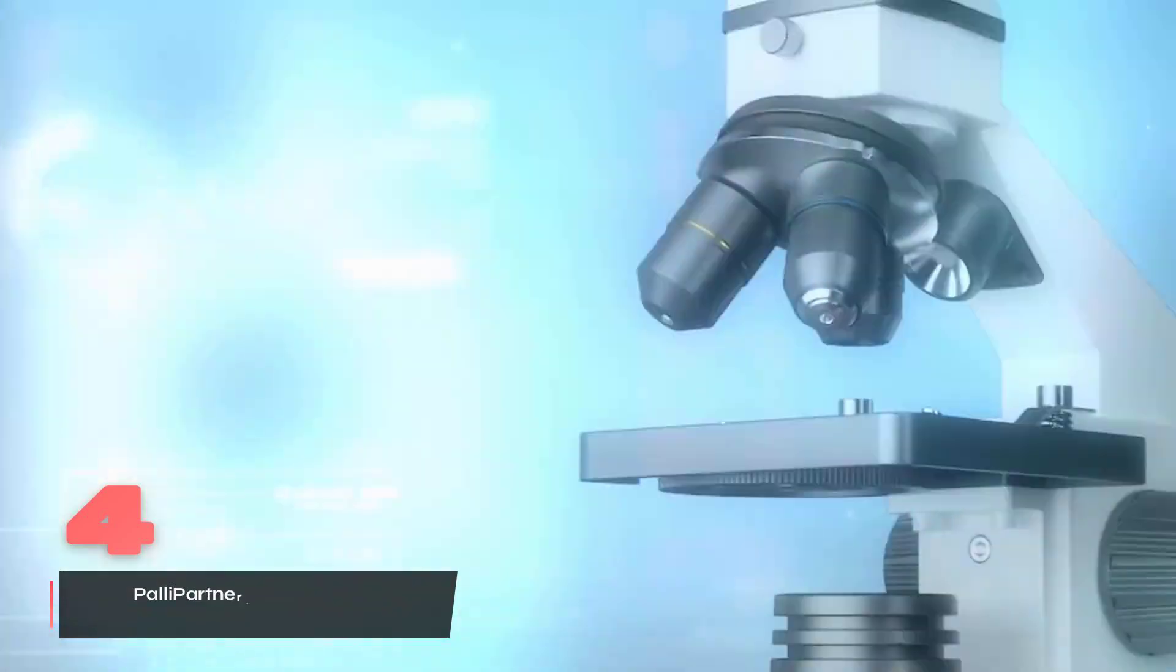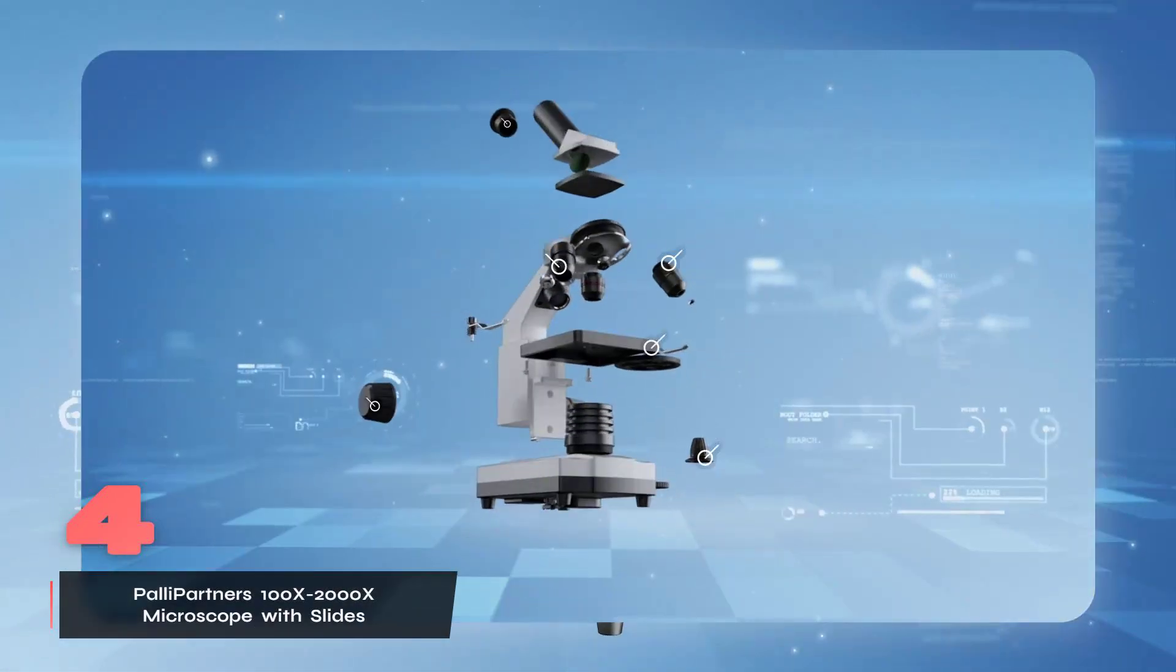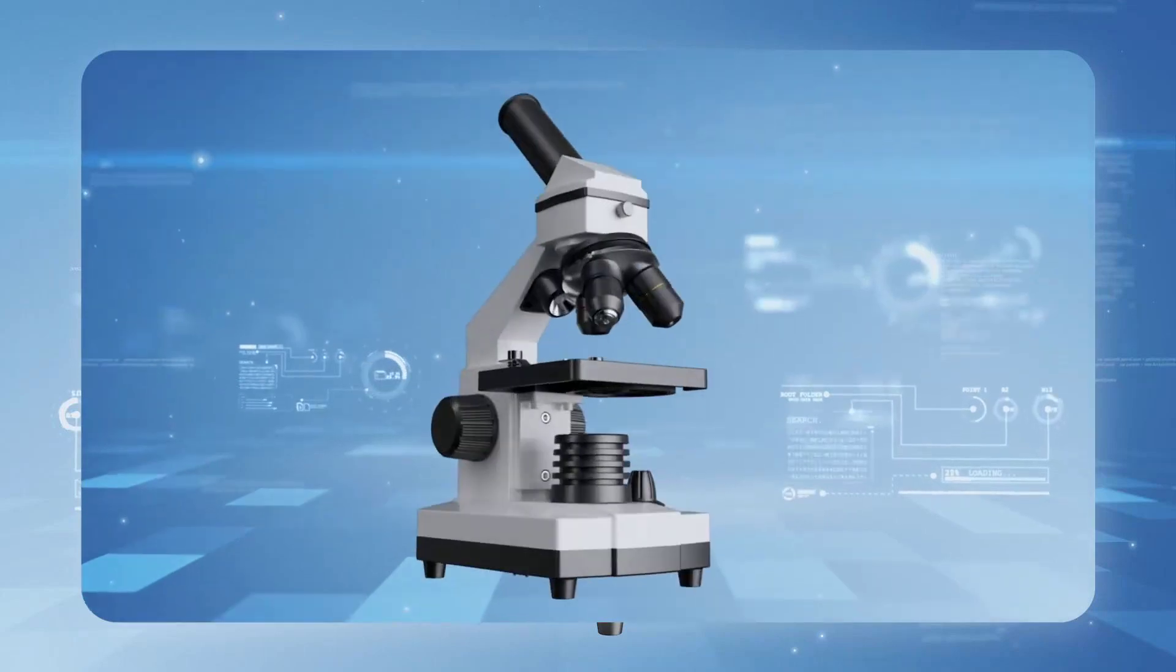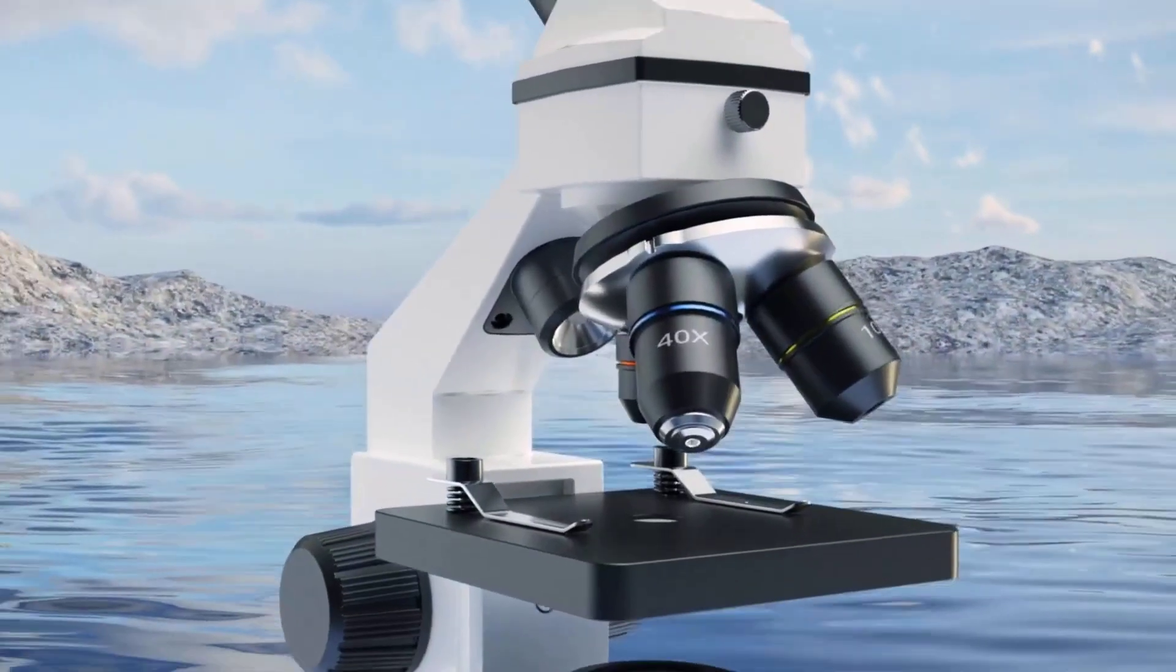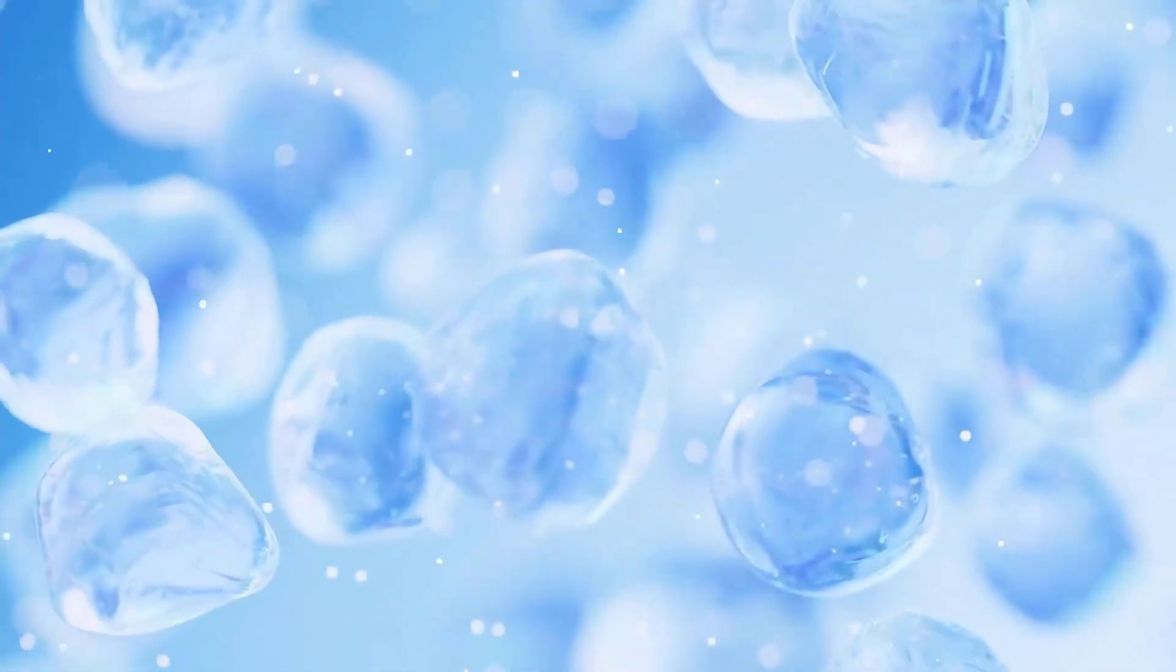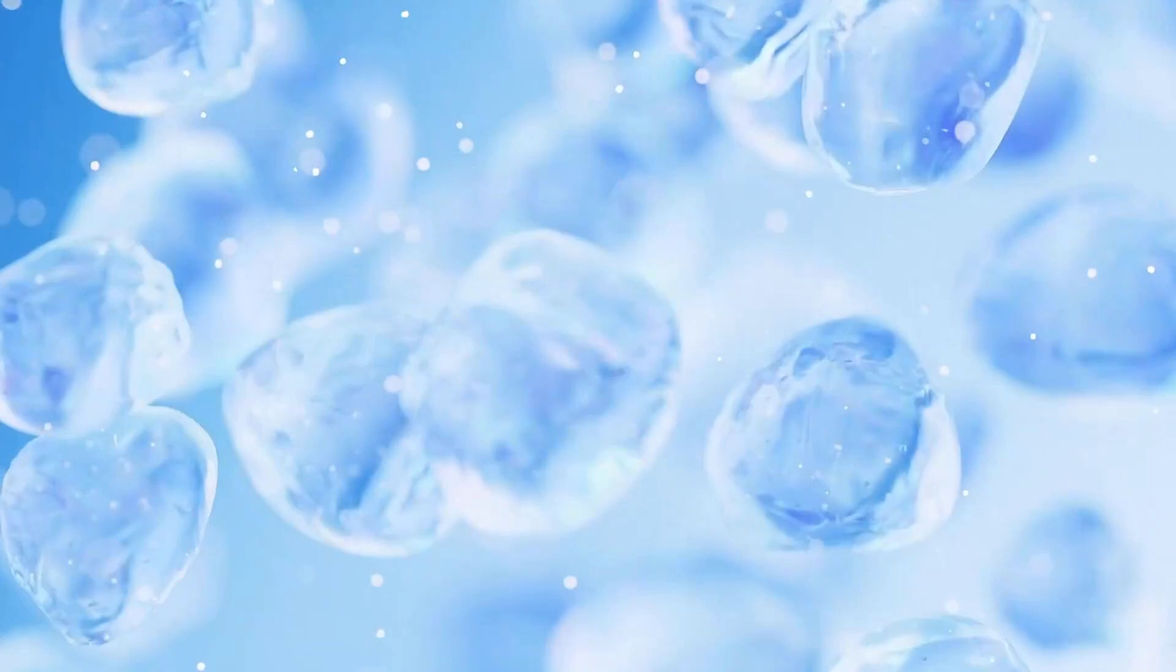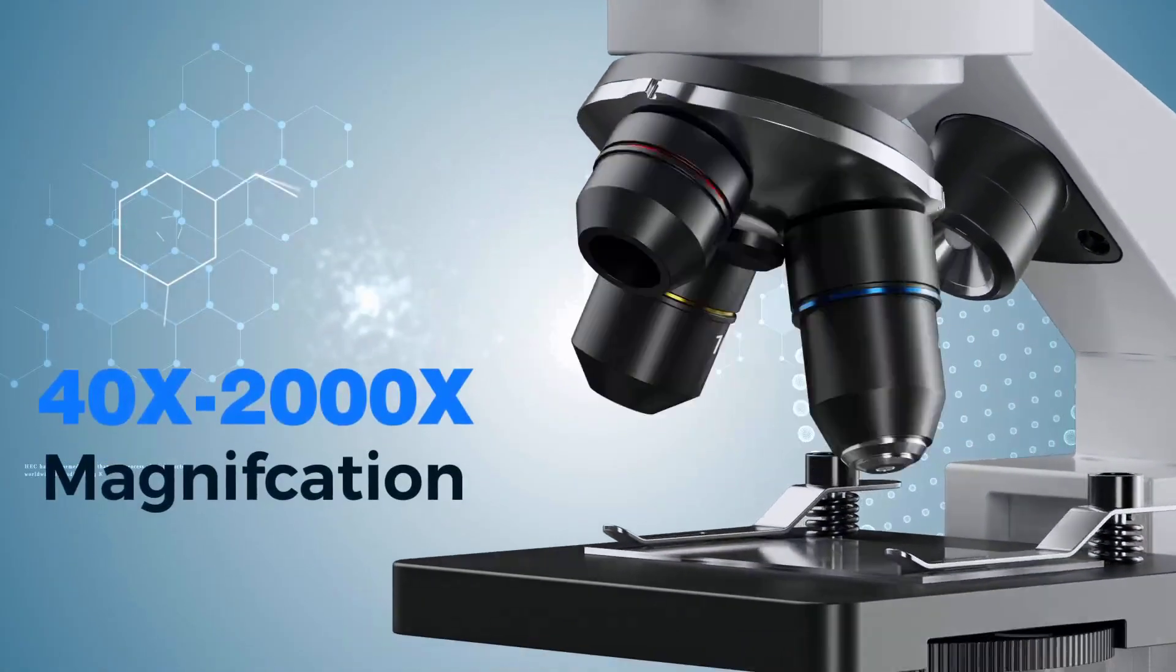Number four, the Pali Partners 100X-2000X microscope delivers impressive magnification capabilities ranging from 100X to 2000X, enabling detailed examination of specimens from plant cells to microscopic organisms. Its six distinct magnification levels, powered by the WF-25X eyepiece combined with multiple objective lenses, provide exceptional viewing flexibility comparable to premium models in this category.